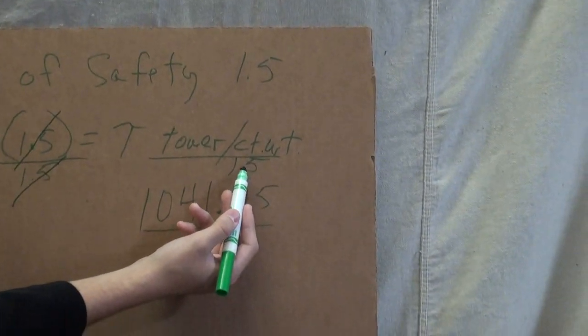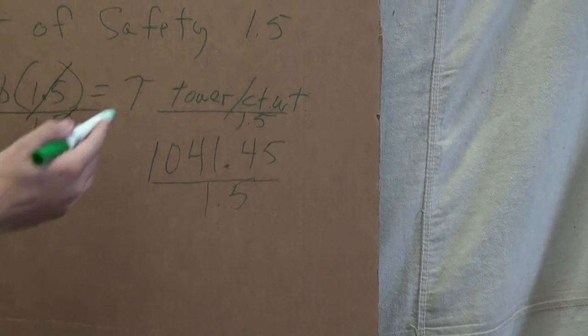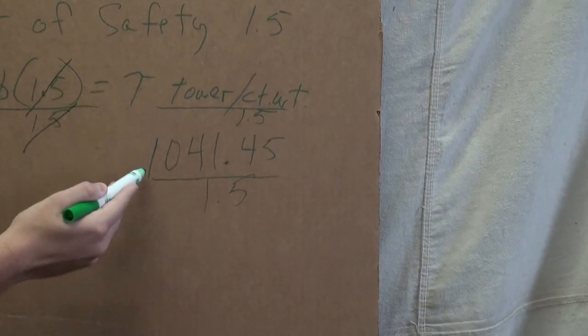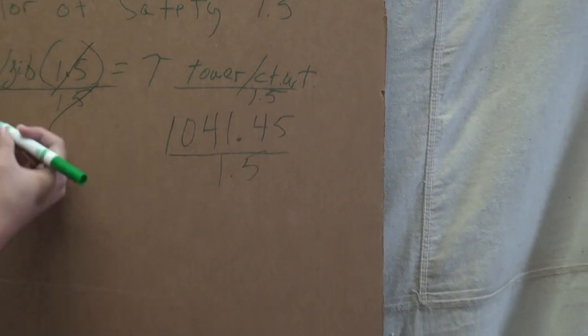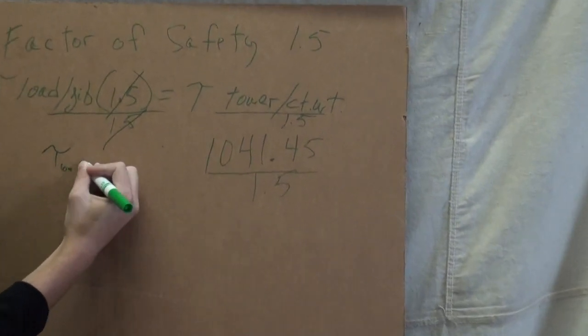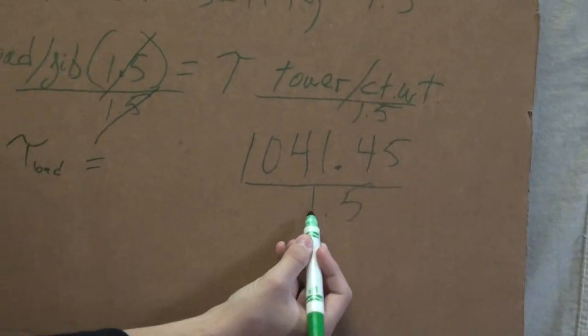And we know the torque of the tower, 1041, and we just divide by 1.5. So that means our torque of the load equals 1041.45 over 1.5.